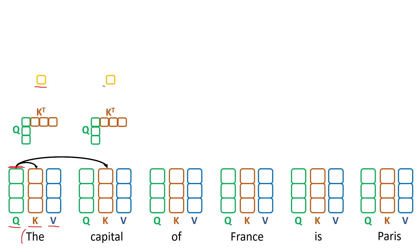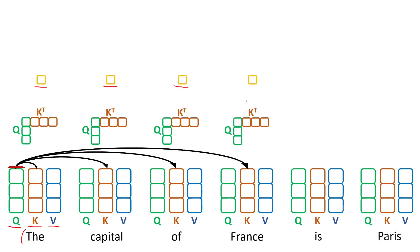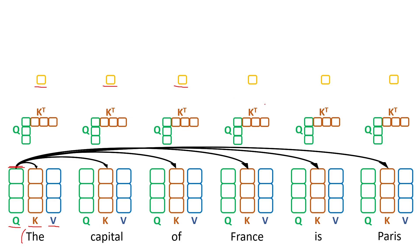Again we take the query, we do a dot product with the key of the third token, and so on for all the keys in the sequence. What you obtain after this operation is basically a set of scalars for each of your input tokens. What you do next is to divide each scalar by sqrt(dk).